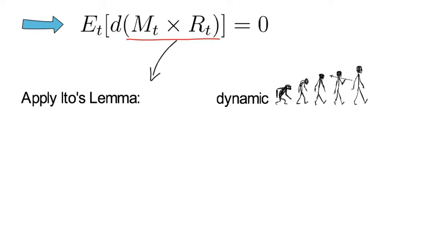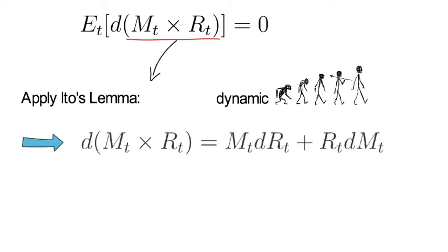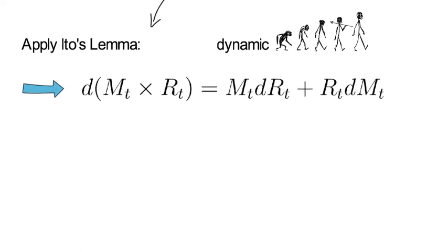So the change of m times R equals m*dR plus R*dm. Let's divide both sides by mt and rt and let's take expectations. Now since the expectation needs to be zero, we also set the expectation to zero, and hence we end up with the following equation here.